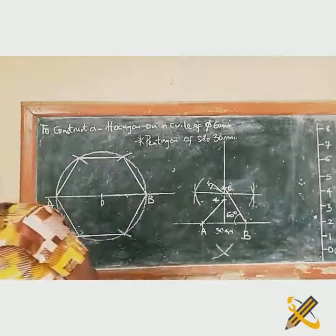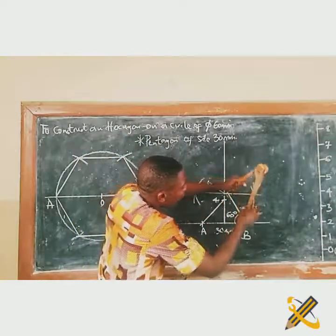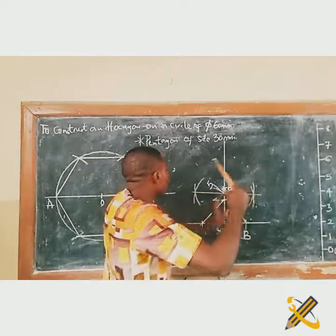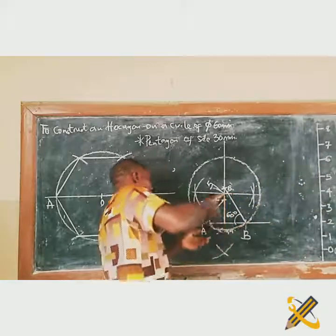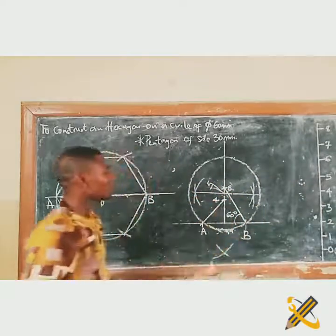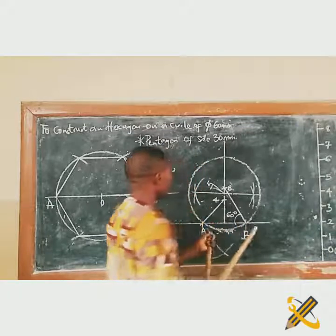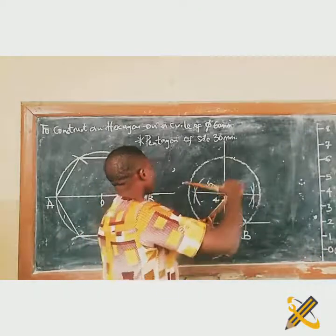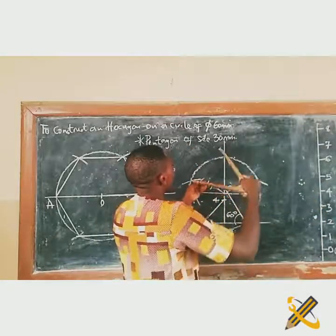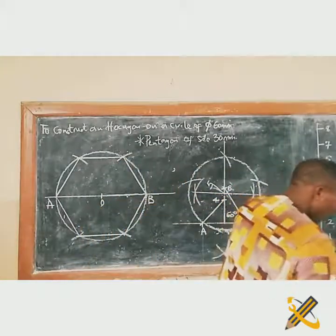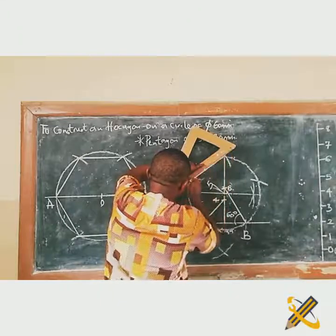Now I place my compass pin on point 5 and extend the distance to either point A or B, and draw a circle. After drawing the circle, I pick my compass and take the distance between A and B. I place the compass on point A and step it off around the circle, striking at each point. Then from point B I continue stepping off. This gives five equal points on the circle — it's five sections. The next thing is to take your ruler and join the edges together to complete the pentagon.